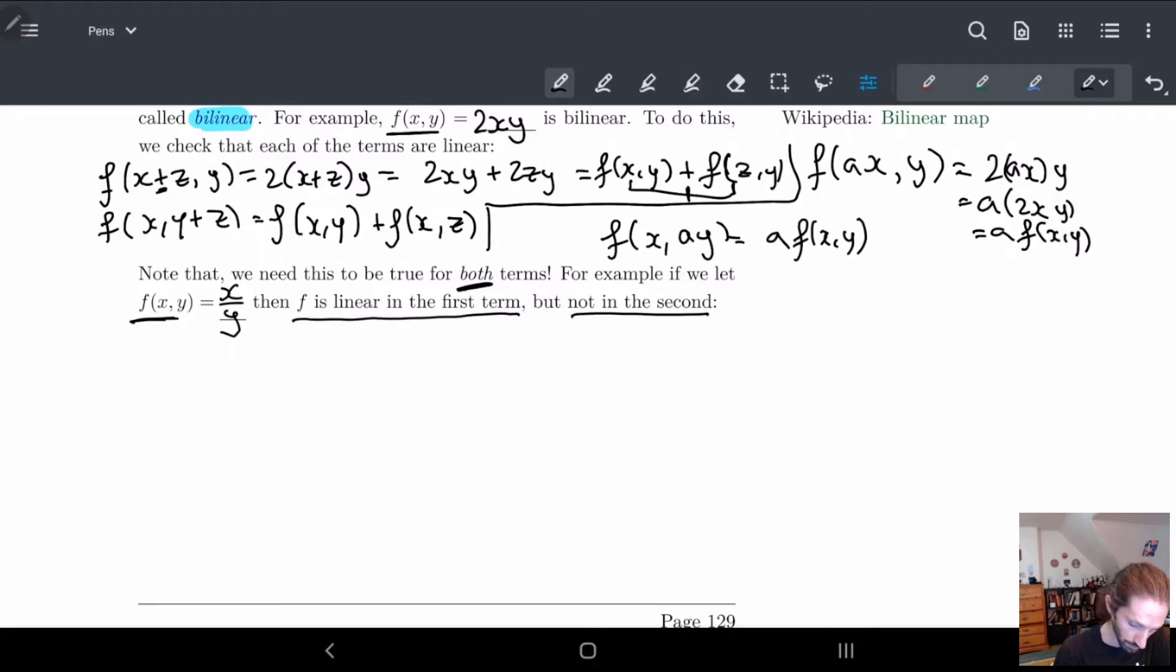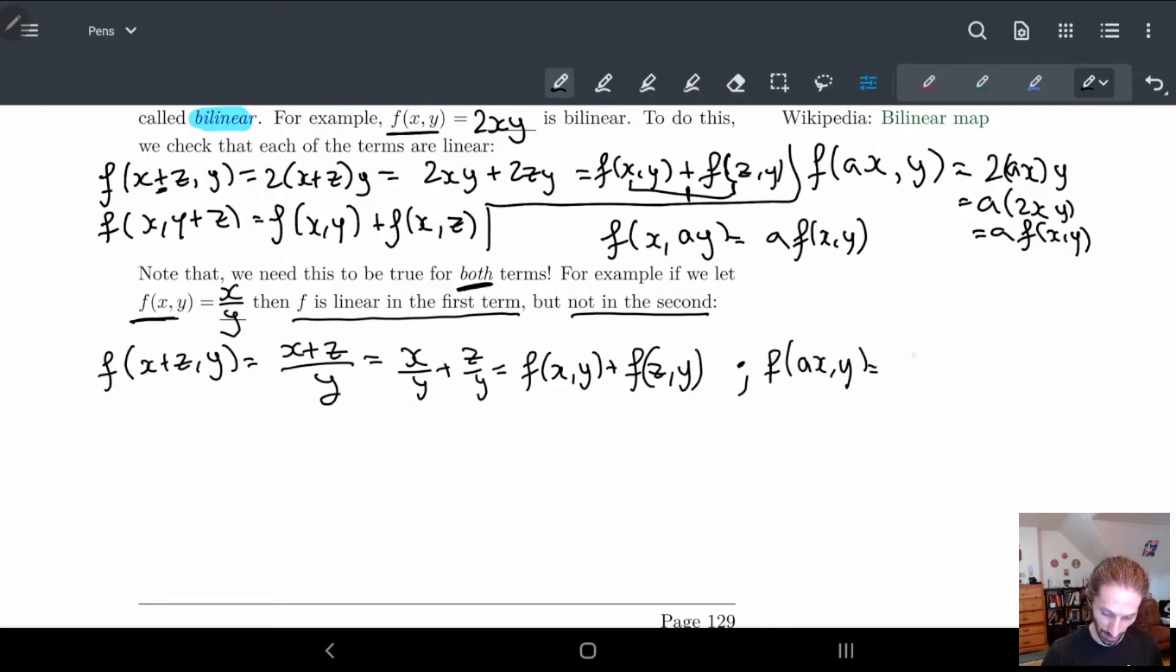If I have f of x plus z divided by and y here this is x plus z divided by y. Here remember I can split these up right because the addition is on the top. So I get x/y plus z over y and this is f of x y plus f of z y. And similarly I can do multiplication right. So f of a x y this is a x over y. And so we get a times x/y which is a of f of x y. So it's nice.